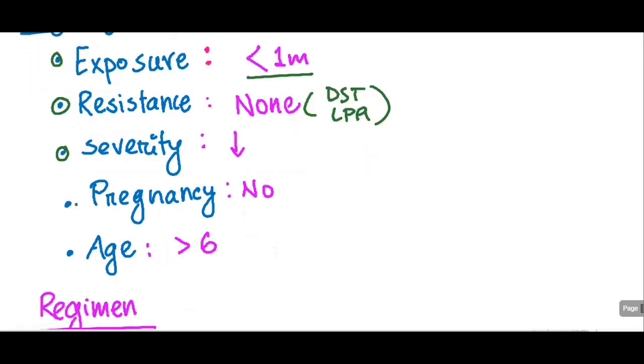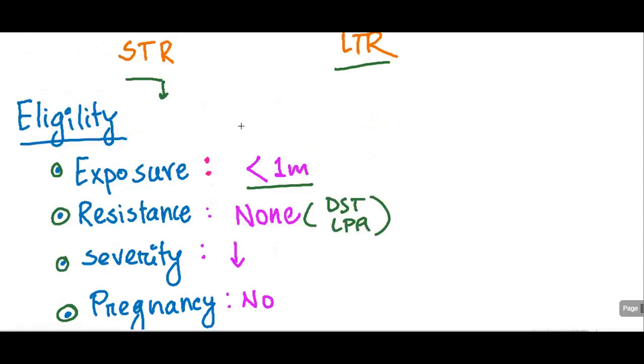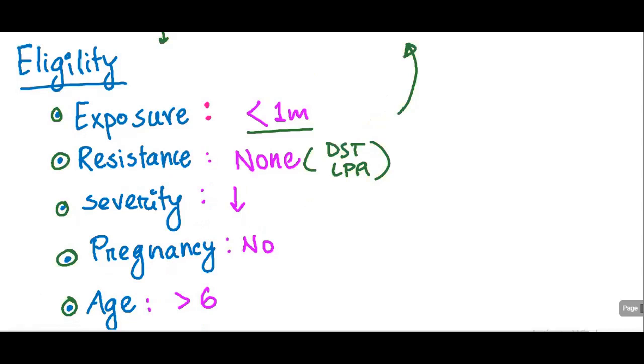The patient should not be pregnant and the age must be greater than six years. Those are the eligibility criteria for a patient taking STR. Whenever any of these criteria are not met, the patient should go to LTR.